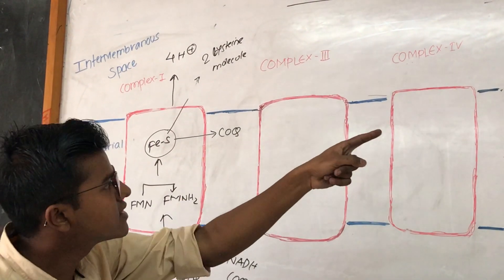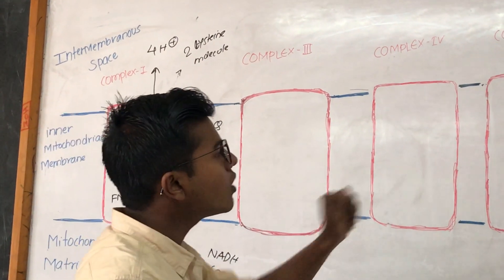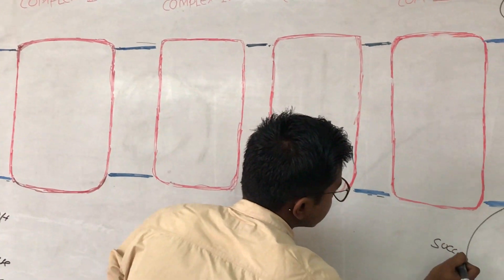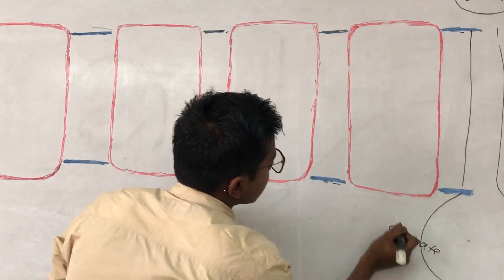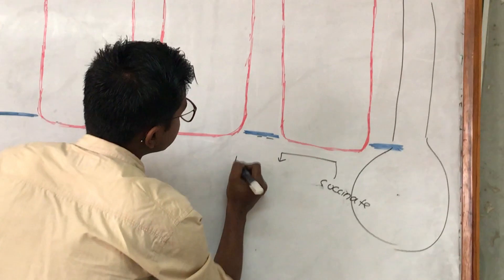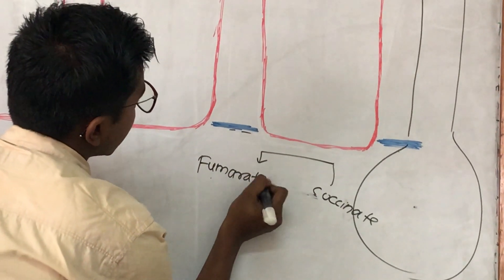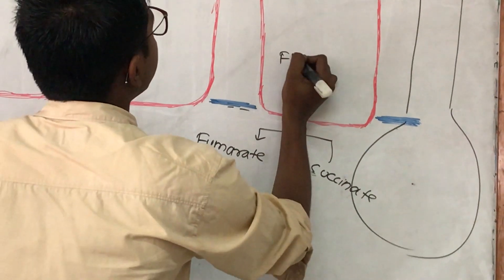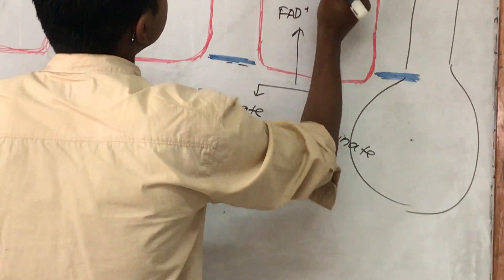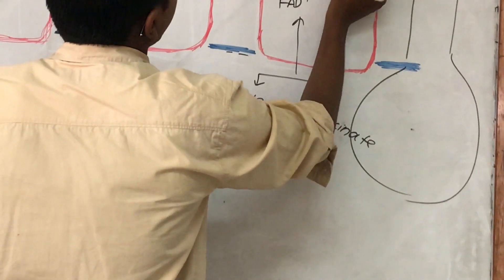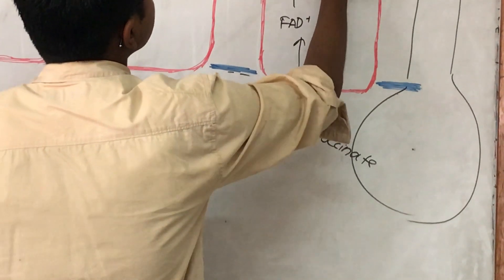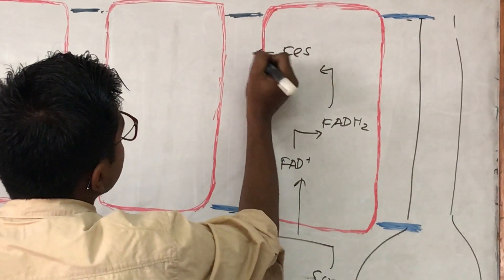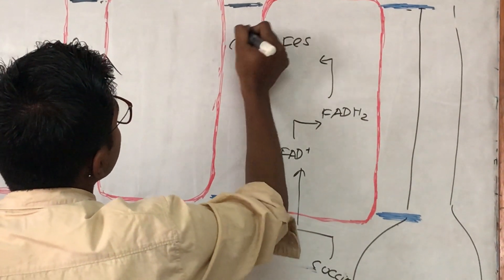The second complex acts when there is a substrate in the form of succinate. Succinate is changed into fumarate, and electrons are transferred to FAD, which is changed into FADH₂. FADH₂ transfers its electrons to the same Fe-S complex, and the Fe-S complex donates its electron to ubiquinone, also known as coenzyme Q.